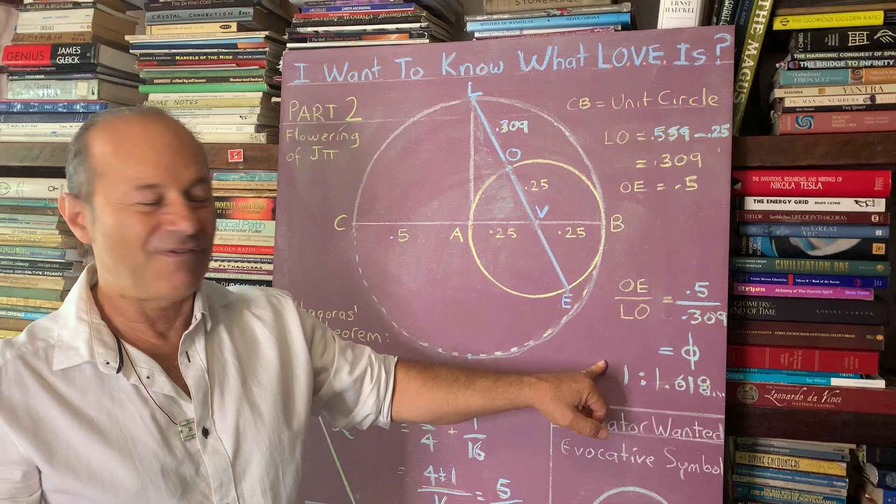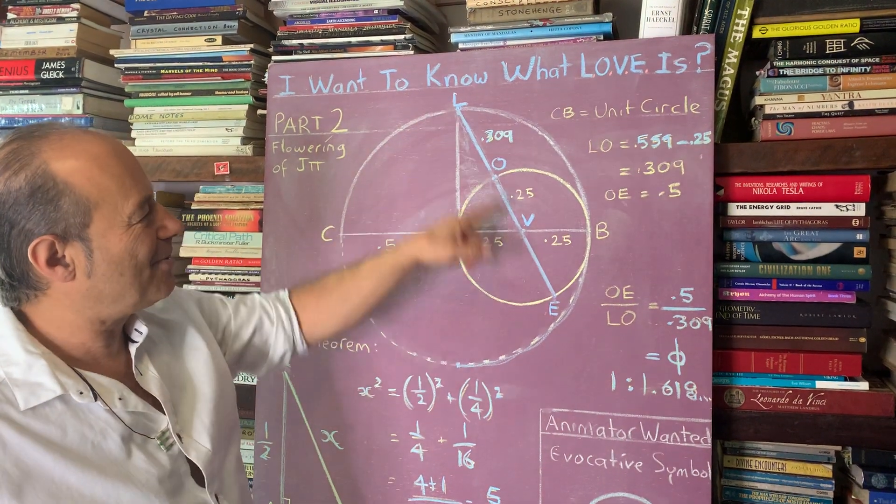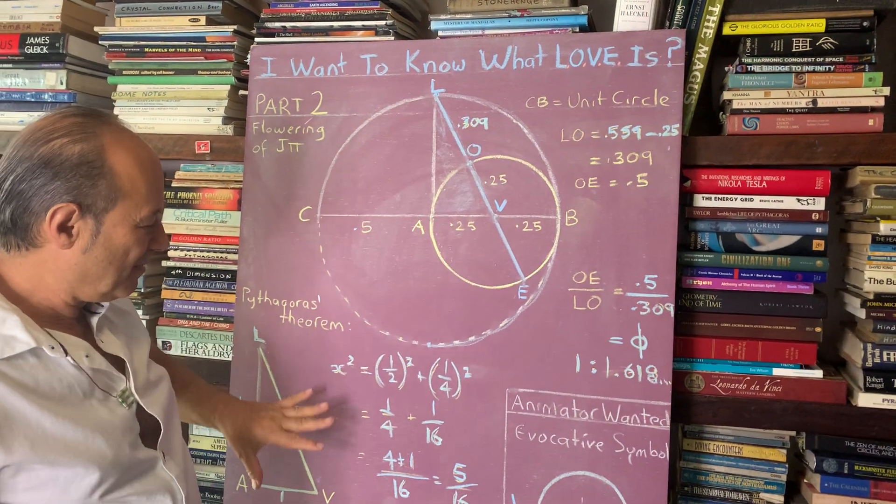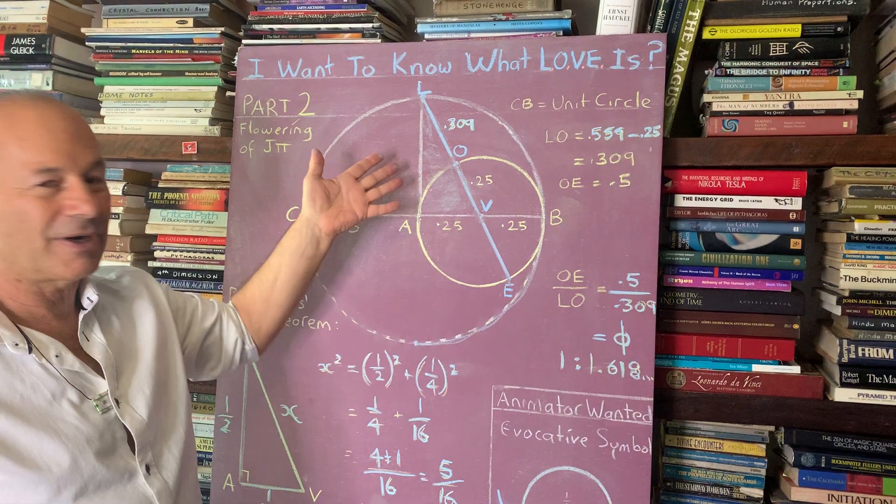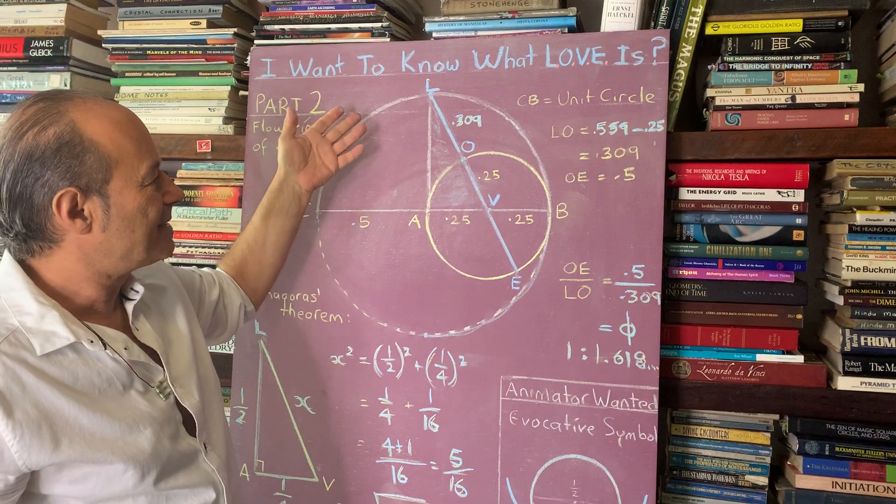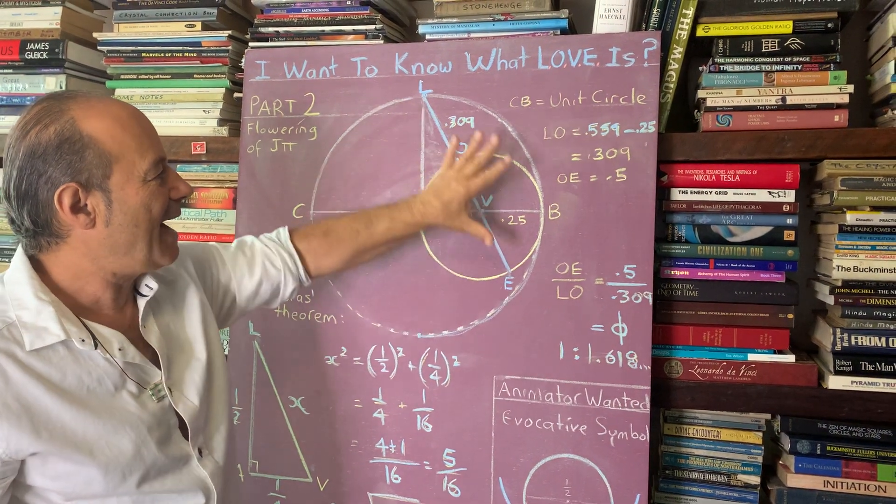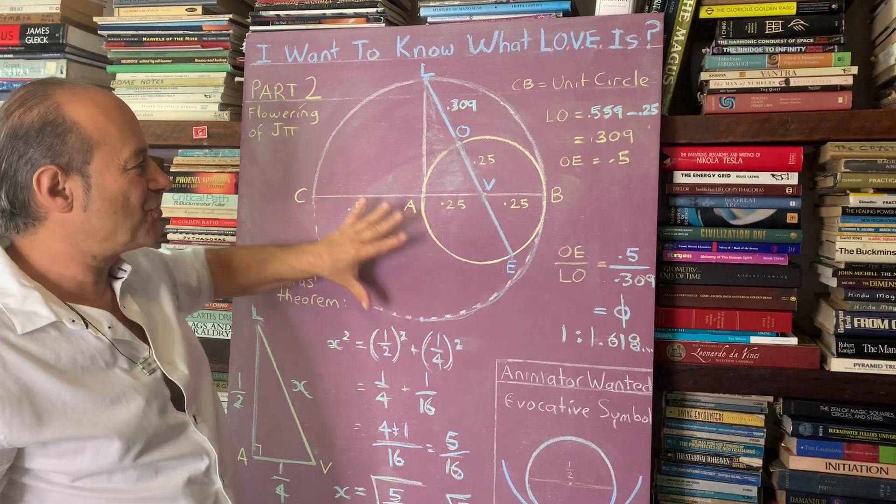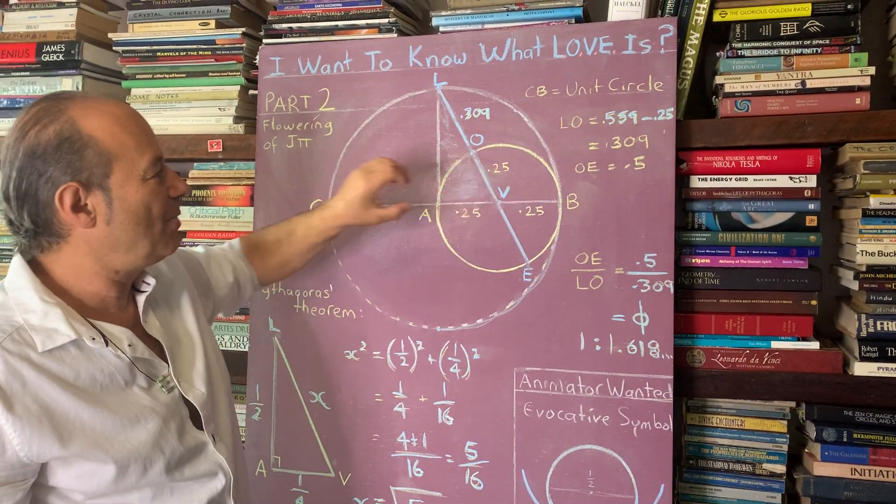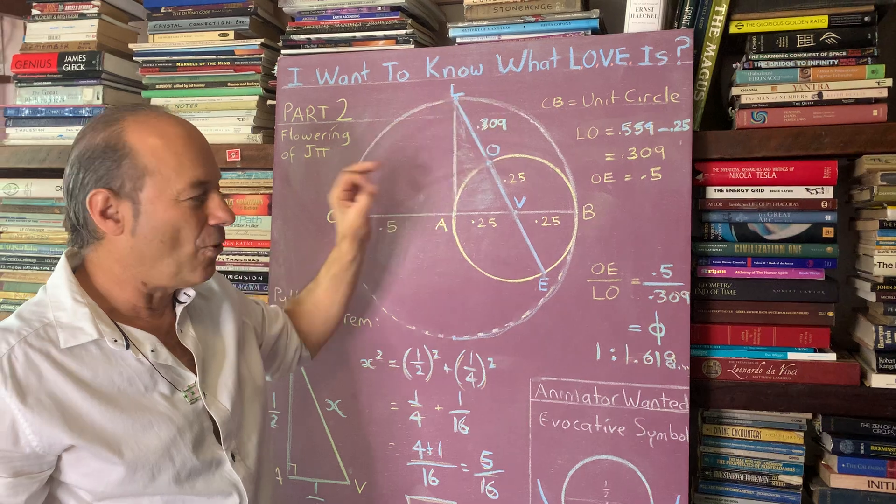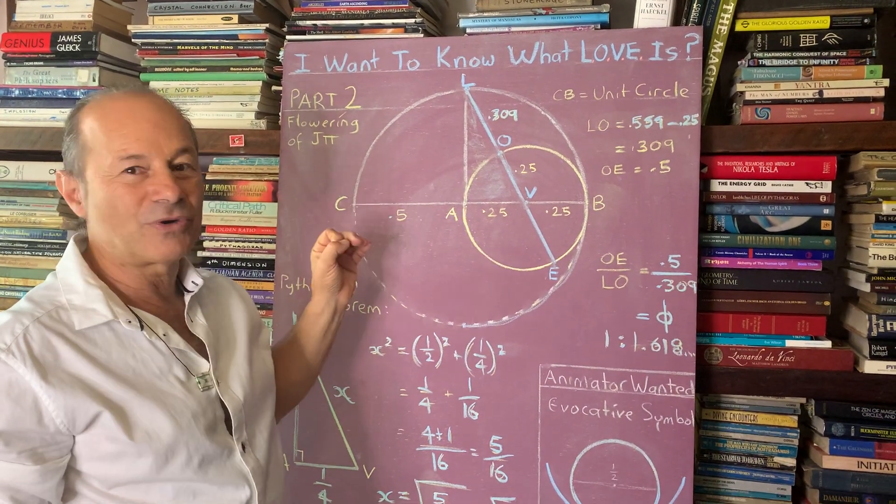So this is critical. Again, without the Pythagoras' theorem, we could not calculate this. So now we know that the harmonics of the circle, when we draw the circle within the circle, it's all based on the golden ratio.